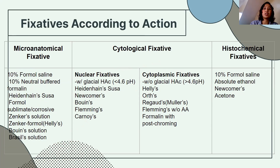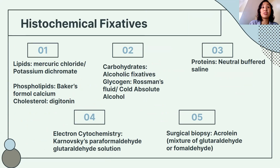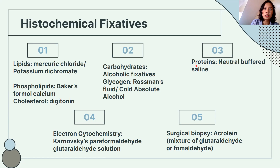Here are examples of histochemical fixatives. For lipids, there are specific fixatives to prevent them from dissolving during dehydration — mercury chloride and Baker's formal calcium for phospholipids; digitonin for cholesterol. For carbohydrates, alcoholic fixatives are used. Glycogen is a stored carbohydrate. For electron microscopy, Karnovsky's paraformaldehyde-glutaraldehyde is used. For surgical biopsies, acrolein is used.